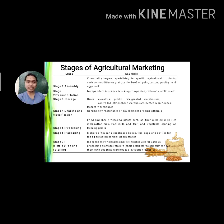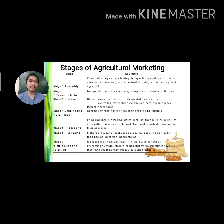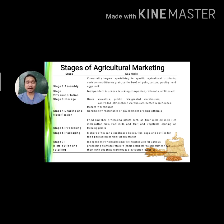Stage seven is distribution and retailing. After packaging the product, it is distributed. This involves independent wholesalers marketing products from various processing plants to retailers, using their own separate warehouses and distribution centers. To summarize the seven stages: assembly, transport, storage, grading and classification, processing, packaging, and distribution.